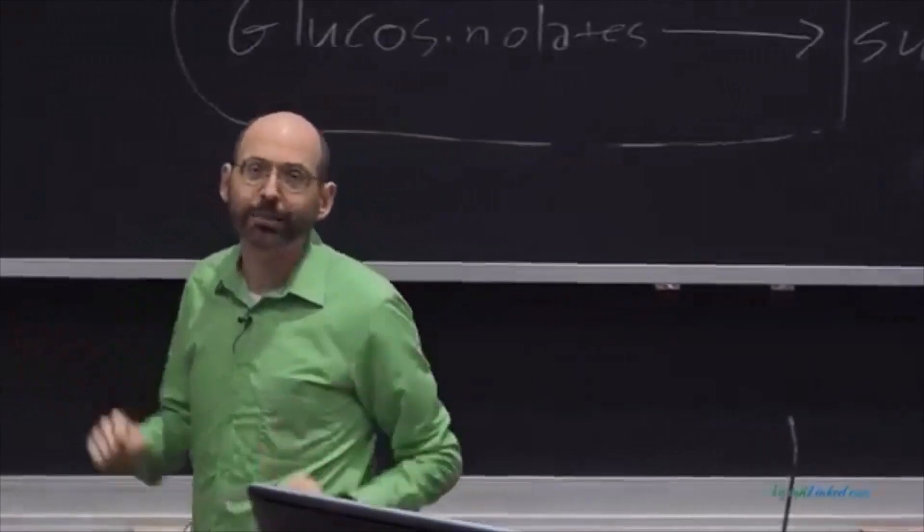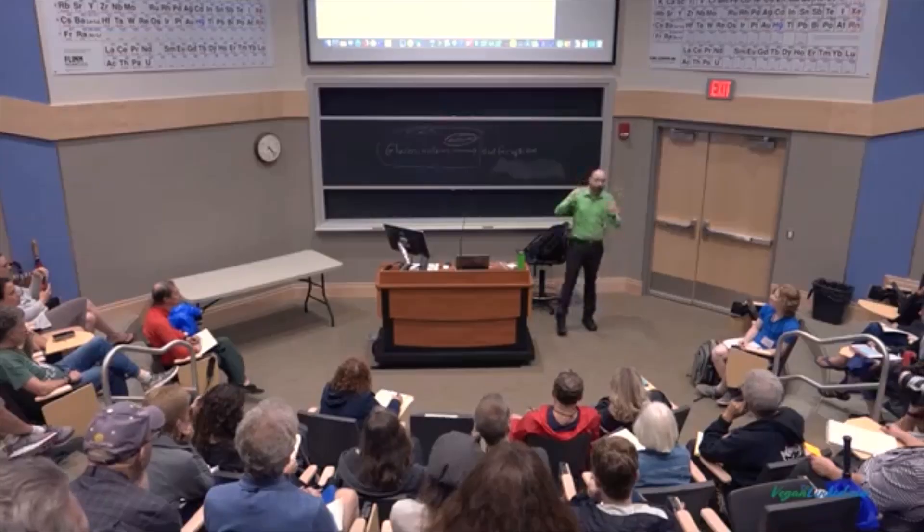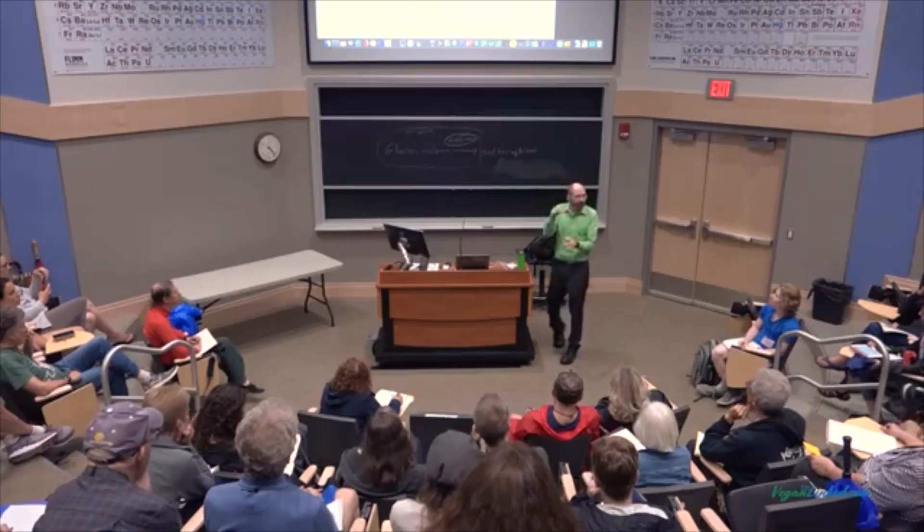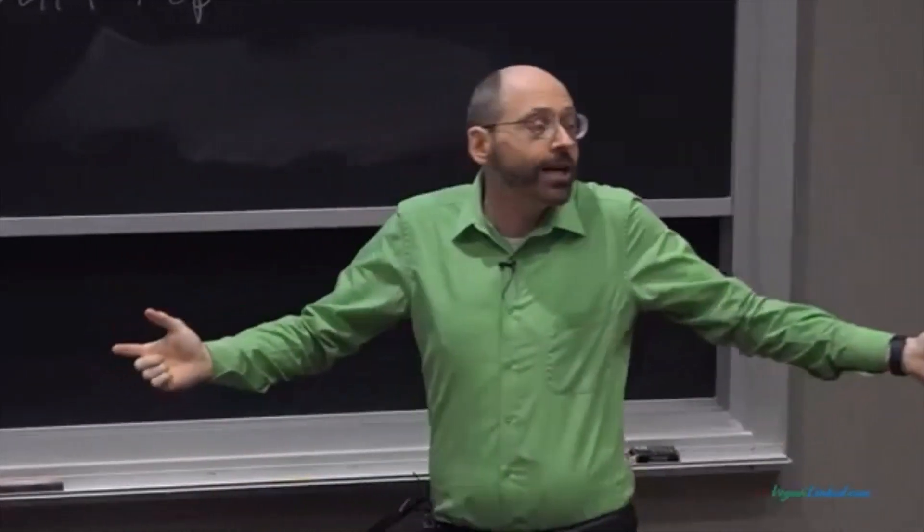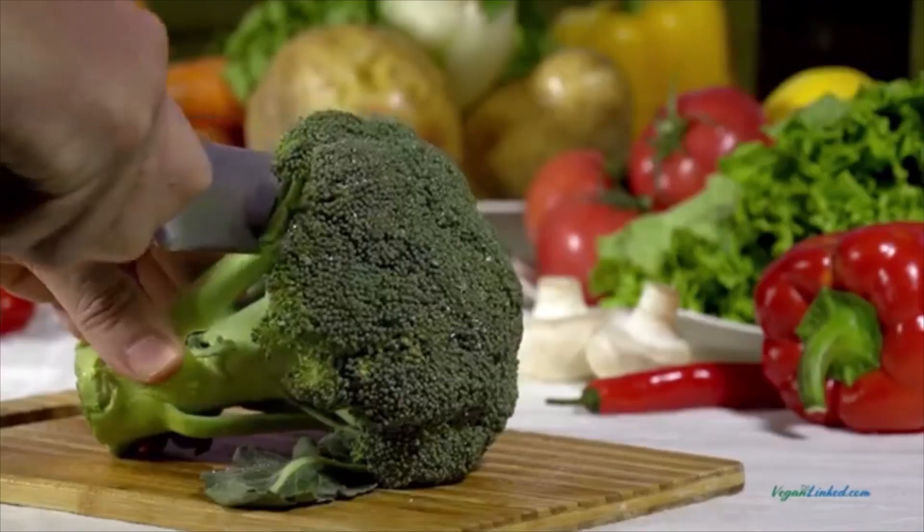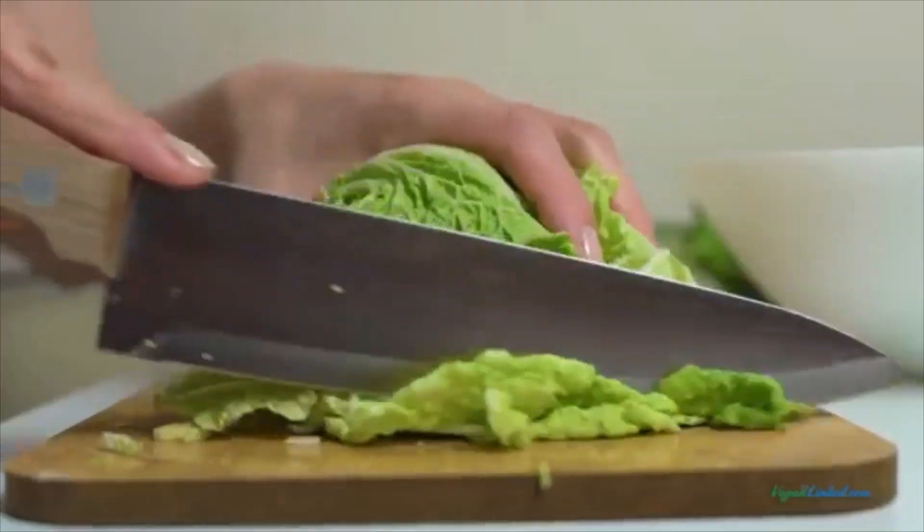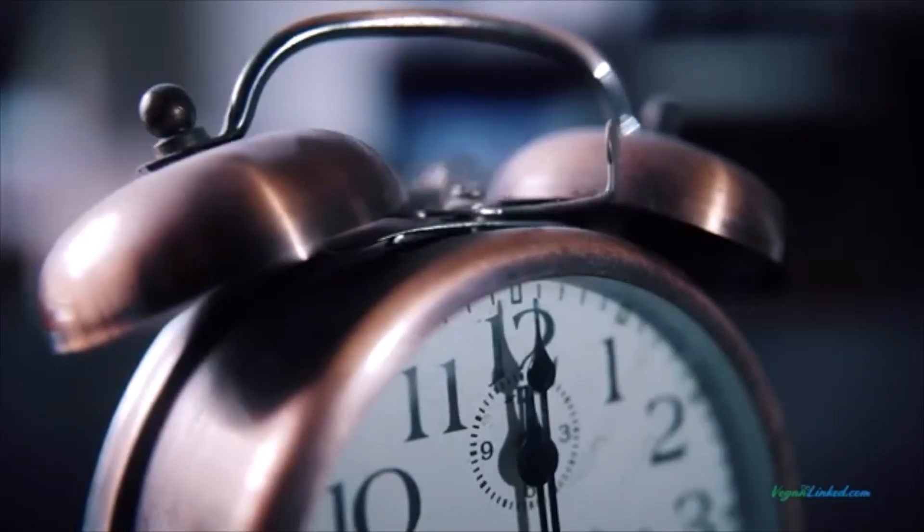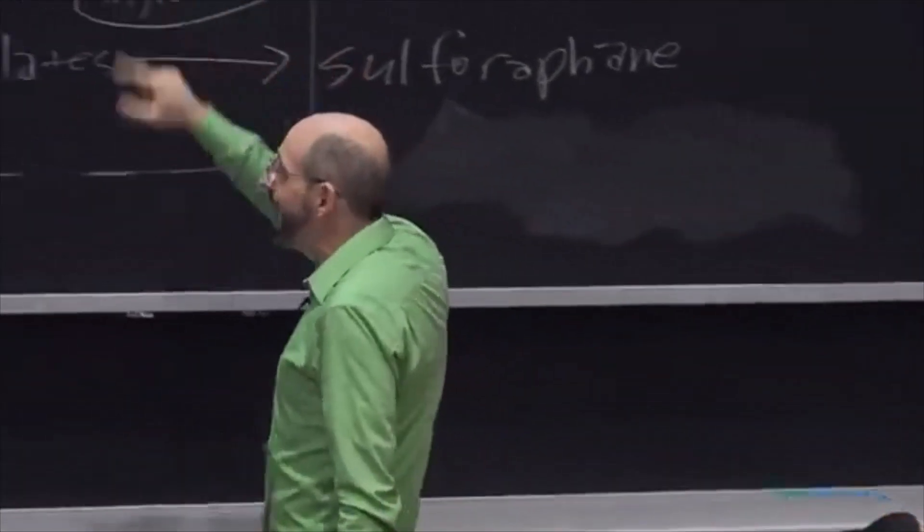So if you're making broccoli soup, how do you make broccoli soup? Most people cook broccoli and then blend it in a blender, right? So you cook broccoli in water, it heats up, then you put it in a blender and make soup. That's the wrong way to do it, because you're killing off the enzyme. What you do is you chop while it's raw, and then you have to wait 45 minutes. This takes 45 minutes to happen.